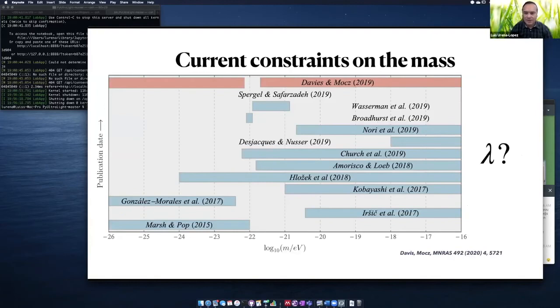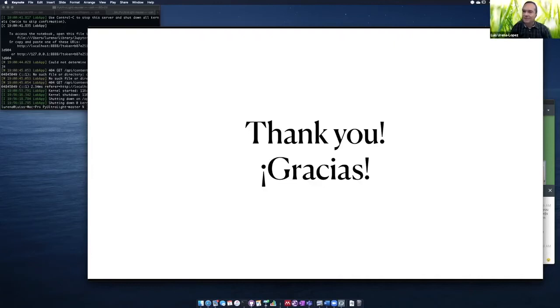I'm finishing here. There are current constraints on the boson mass for these ultralight particles. You can see some of the most recent constraints on this mass. The question is, where is the parameter lambda? Where are any other parameters in the model? These constraints only work for the boson mass for the fuzzy dark matter case, but probably there is something else if we consider an extra parameter in the potential. Thank you for your attention.